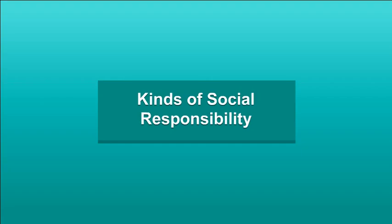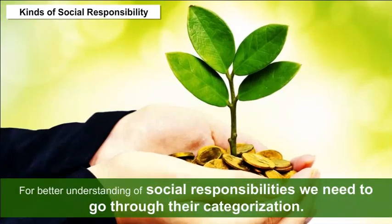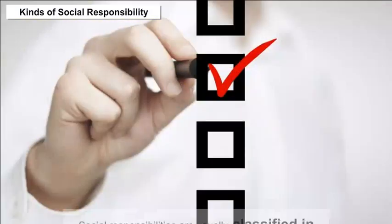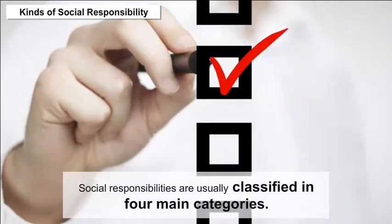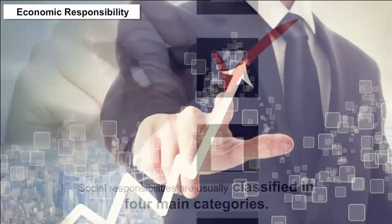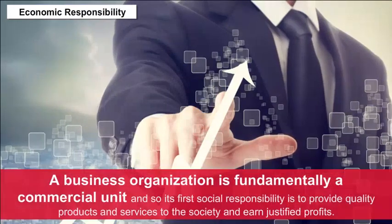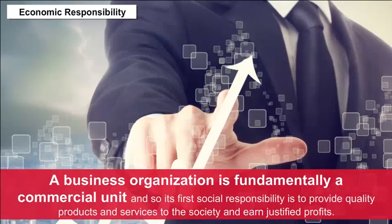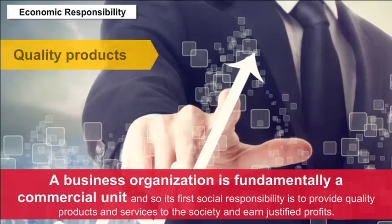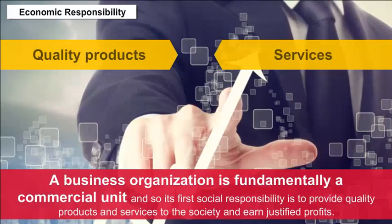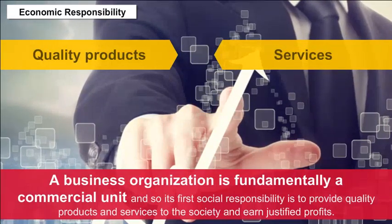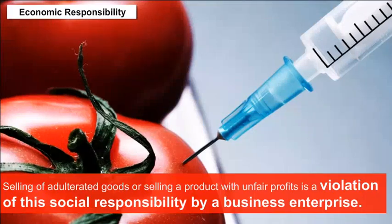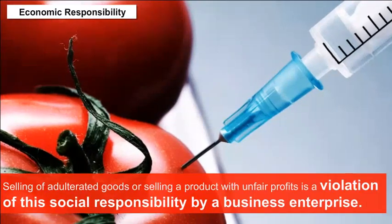Kinds of Social Responsibility: For better understanding of social responsibilities, we need to go through their categorization. Social responsibilities are usually classified in four main categories. Economic Responsibility: A business organization is fundamentally a commercial unit, and so its first social responsibility is to provide quality products and services to society and earn justified profits. Selling adulterated goods or selling a product with unfair profits is a violation of this social responsibility.